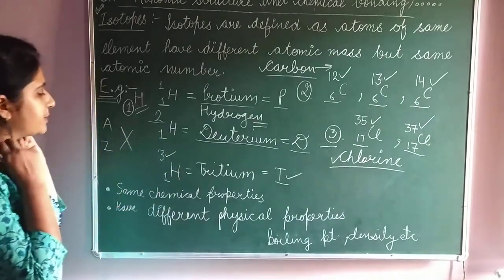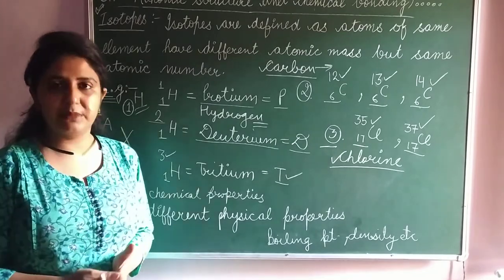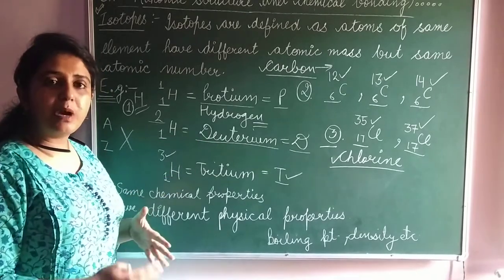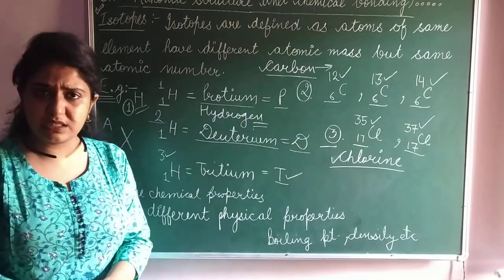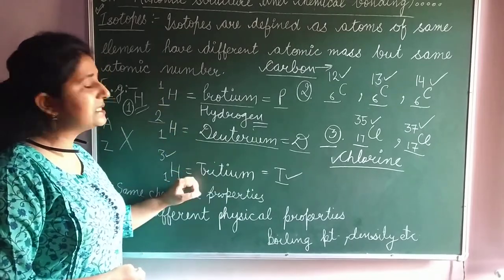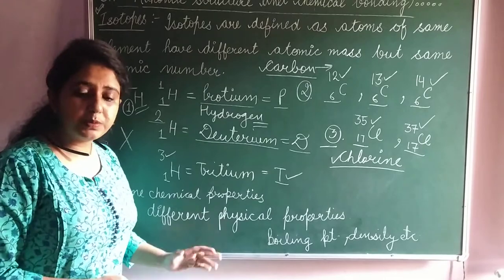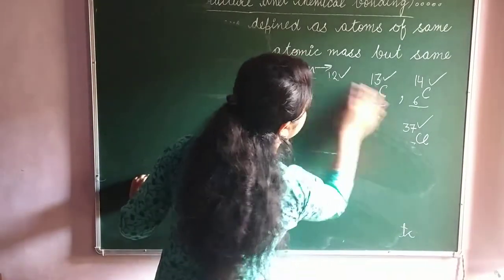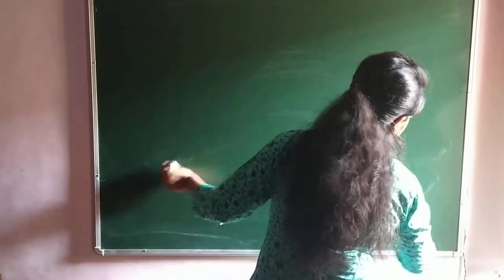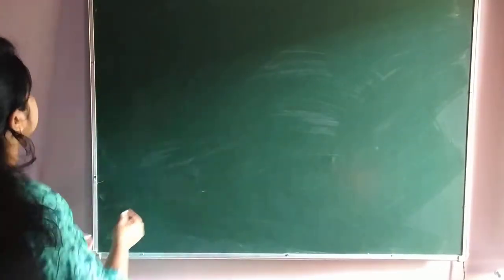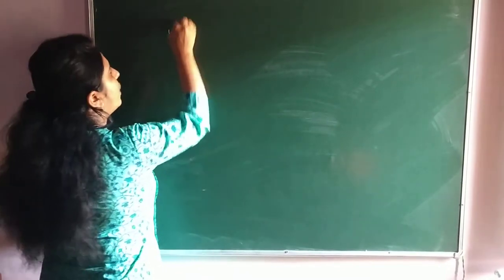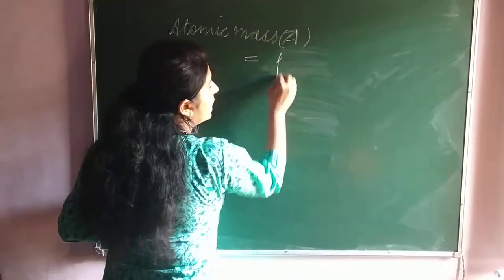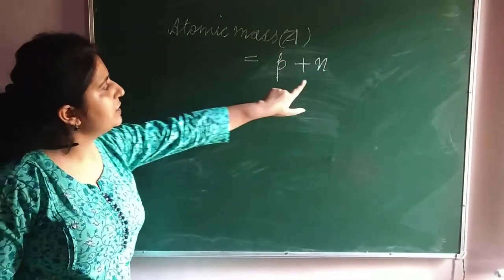Is this clear to you all? Now, moving on to the properties. If we talk about chemical properties — how one isotope reacts with another atom — we need to understand what the difference is between these isotopes. As we see, there is a difference in their atomic mass, not atomic number. There is a difference in their atomic mass. Atomic mass, represented by symbol A, equals number of protons plus number of neutrons.